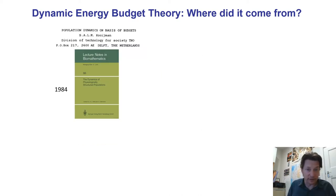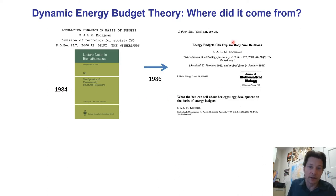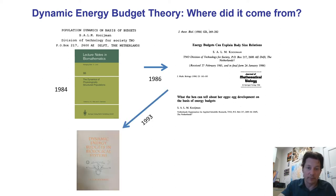The whole thing started with a publication from 1984 about population dynamics — the idea was to develop a population dynamics model based on individual energetics. That led to the first theoretical papers: 'Energy budgets can explain body size relations' in 1986 in the Journal of Mathematical Biology and the Journal of Theoretical Biology, as well as a paper about egg development. Not the most high-profile publications, but by that point the theory was largely finalized.